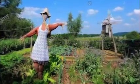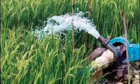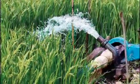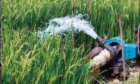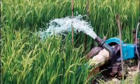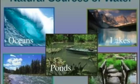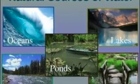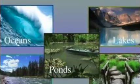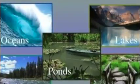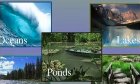Explanation of irrigation: The supply of water to crops at regular intervals is called irrigation. Sources of irrigation include wells, tube wells, ponds, lakes, rivers, dams, etc.